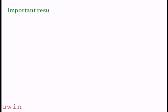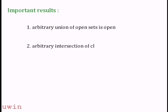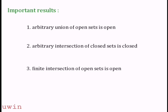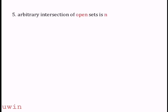Important results: First, arbitrary union of open sets is open. Second, arbitrary intersection of closed sets is closed. Third, finite intersection of open sets is open. Fourth, finite union of closed sets is closed. Fifth, arbitrary intersection of open sets need not be open. For example, the intersection of the open intervals (-1/n, 1/n) for all n gives the single point set {0}, which is closed, not open.